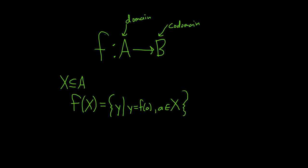This is called the image of X under F. And let me show you what it looks like graphically so you understand what it is. It's all of the y values that come from X.